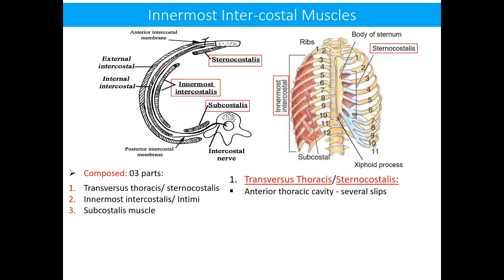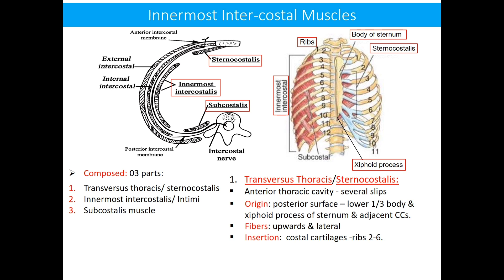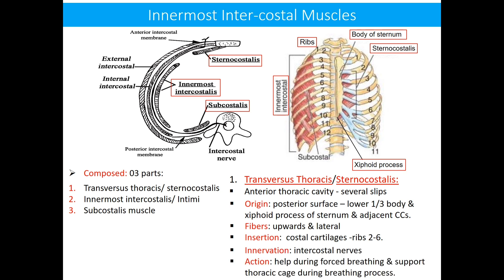First, the sternocostalis muscle. We can see in both diagrams that this muscle is present in the anterior part of the thoracic cavity in the shape of several slips. This muscle originates from the posterior surface of the lower one-third of the body and xiphoid process of the sternum, plus adjacent costal cartilages. The fibers travel upward and laterally and are inserted into the costal cartilages of the 2nd to 6th ribs. Sternocostalis is innervated by intercostal nerves and helps during forced breathing, supporting the thoracic cage during deep breathing.